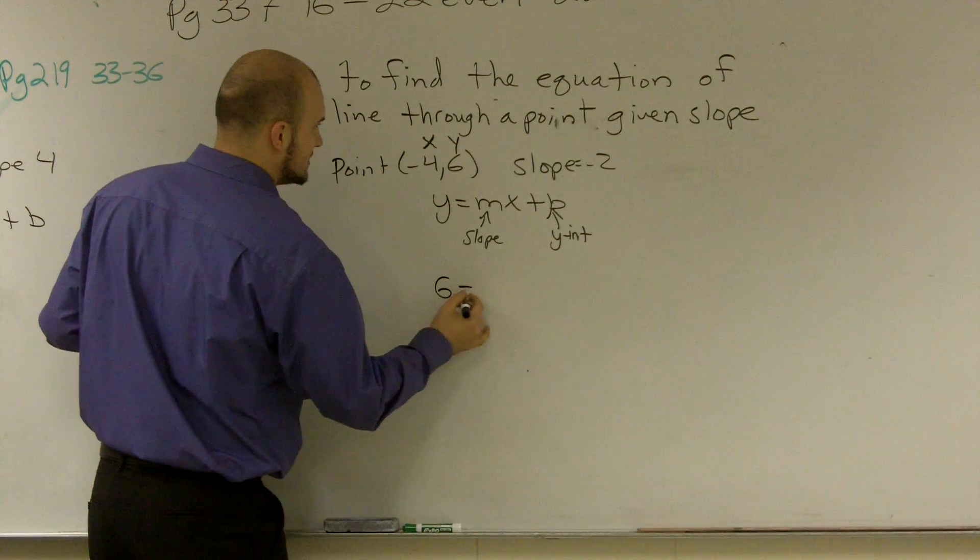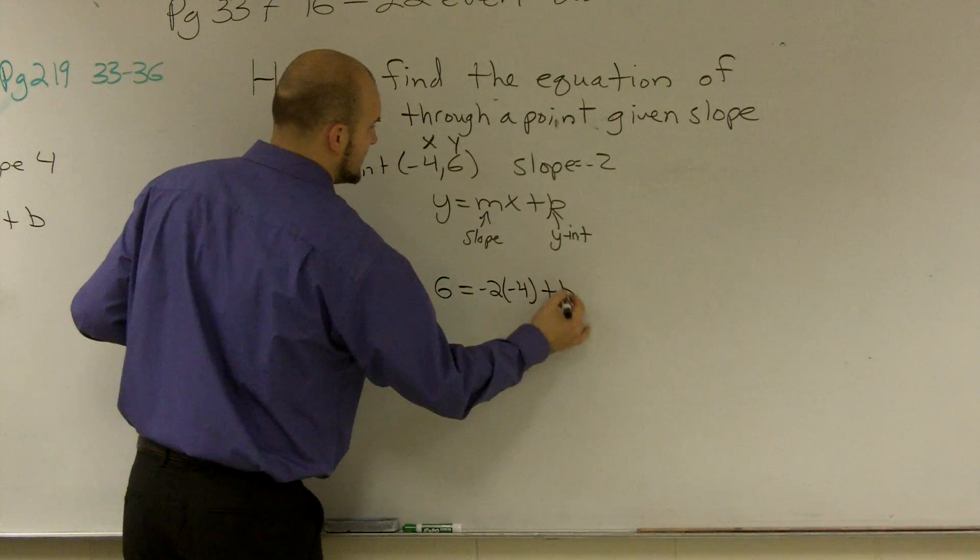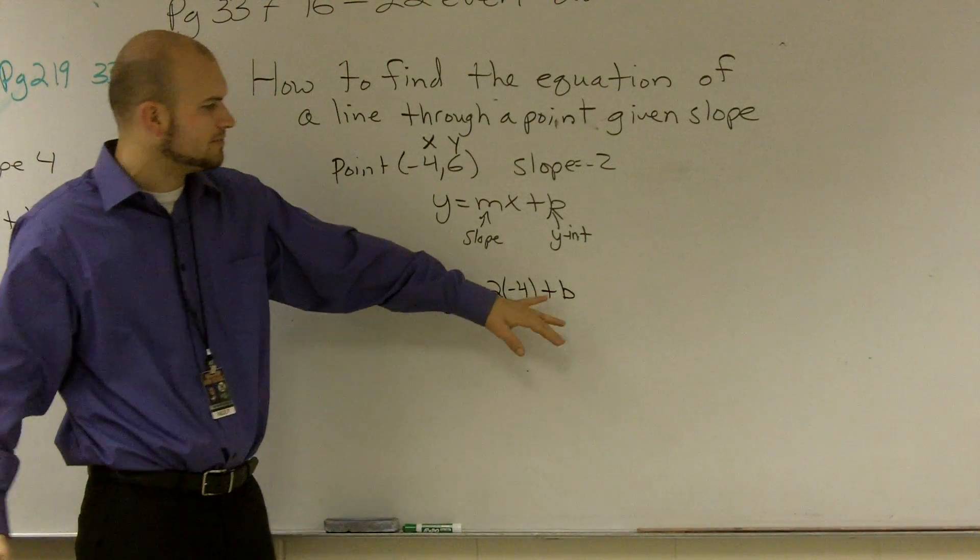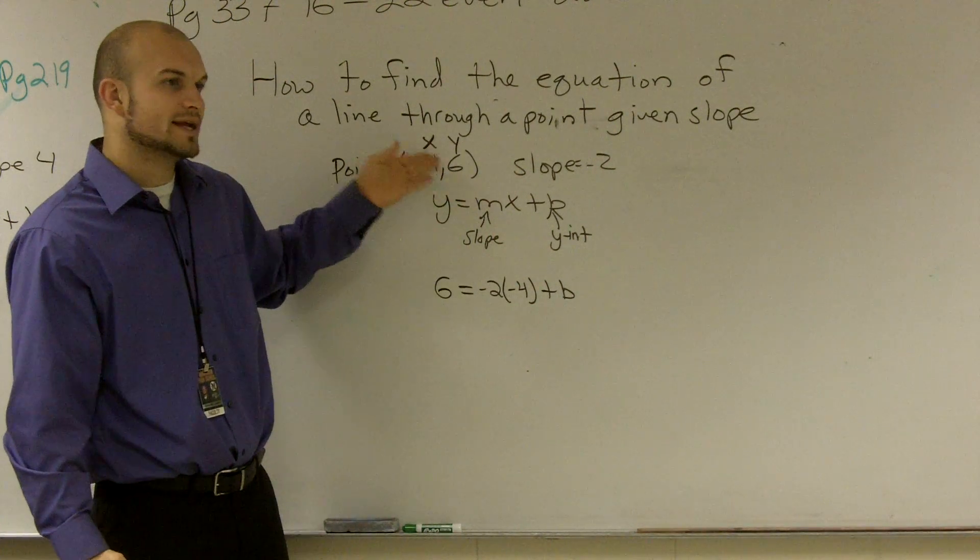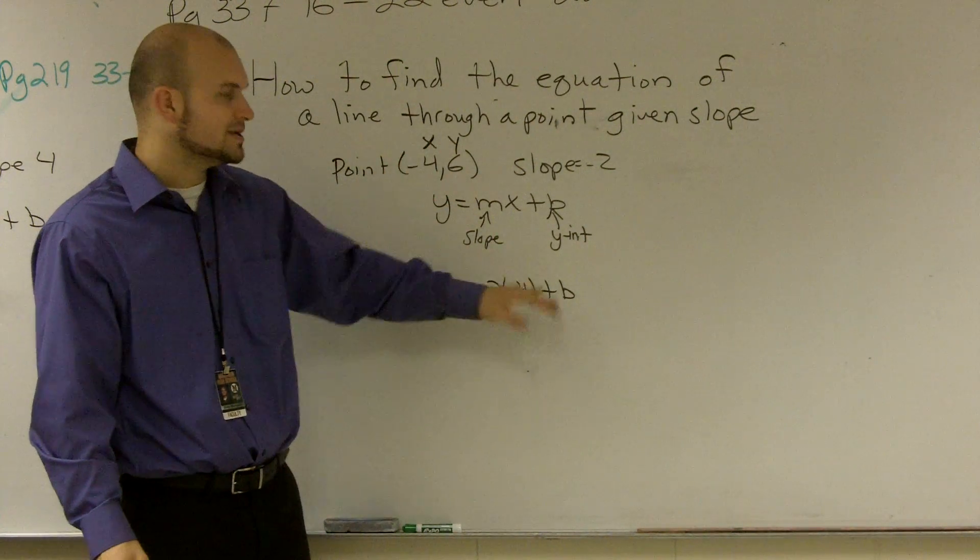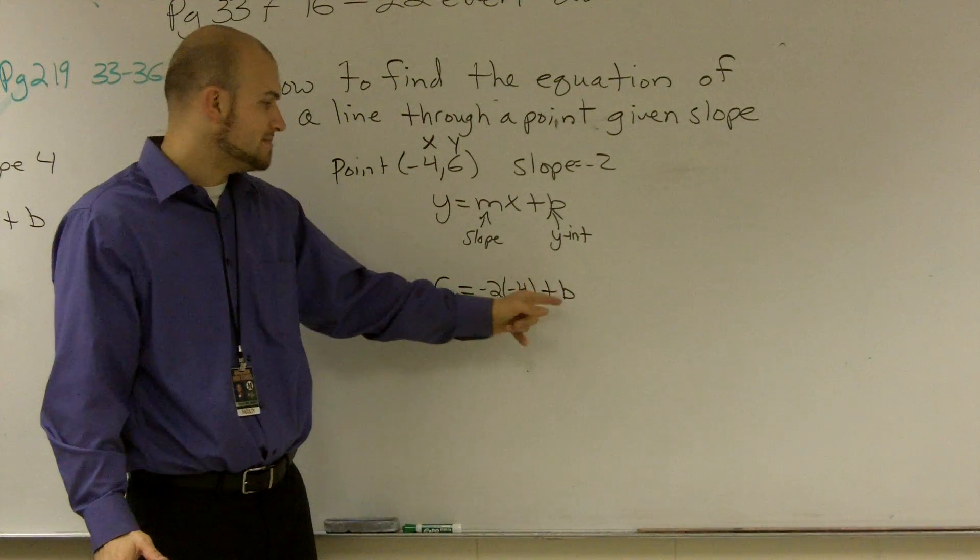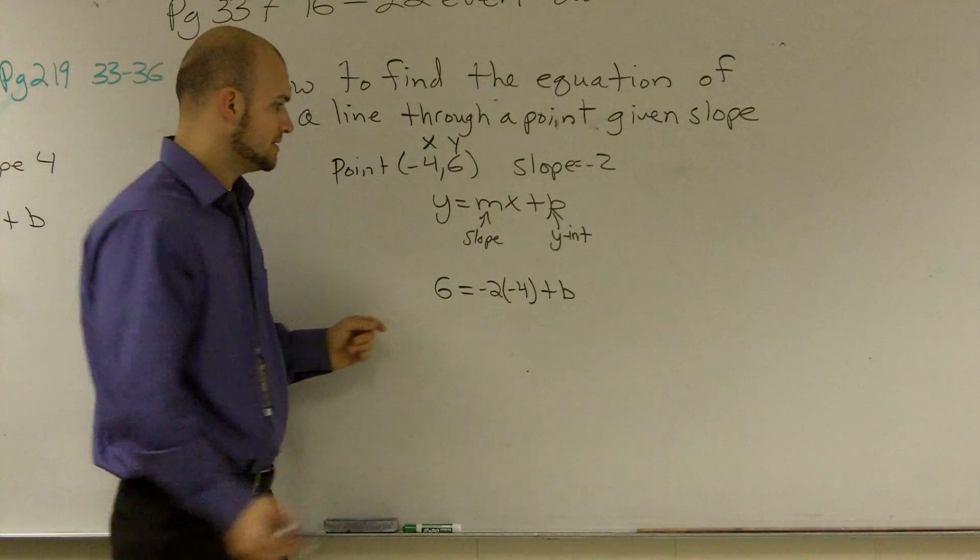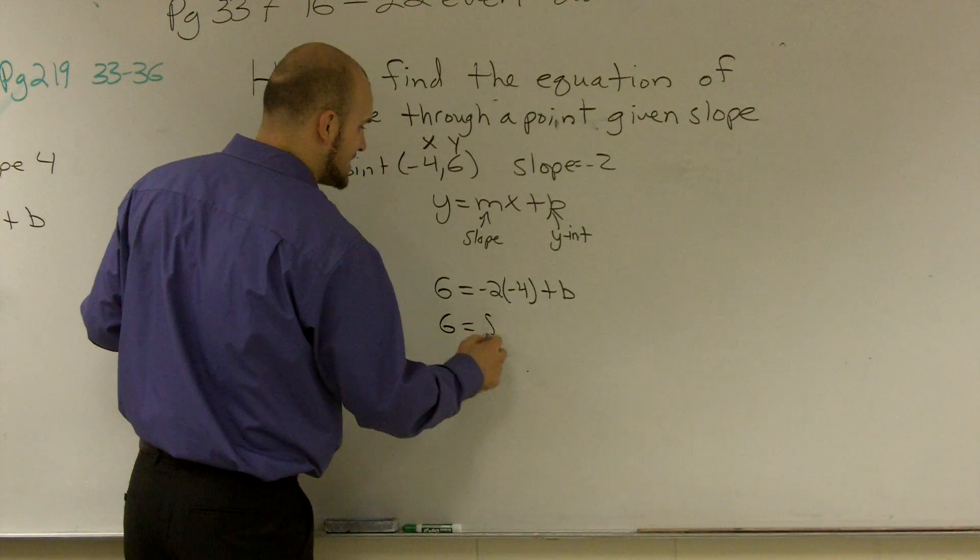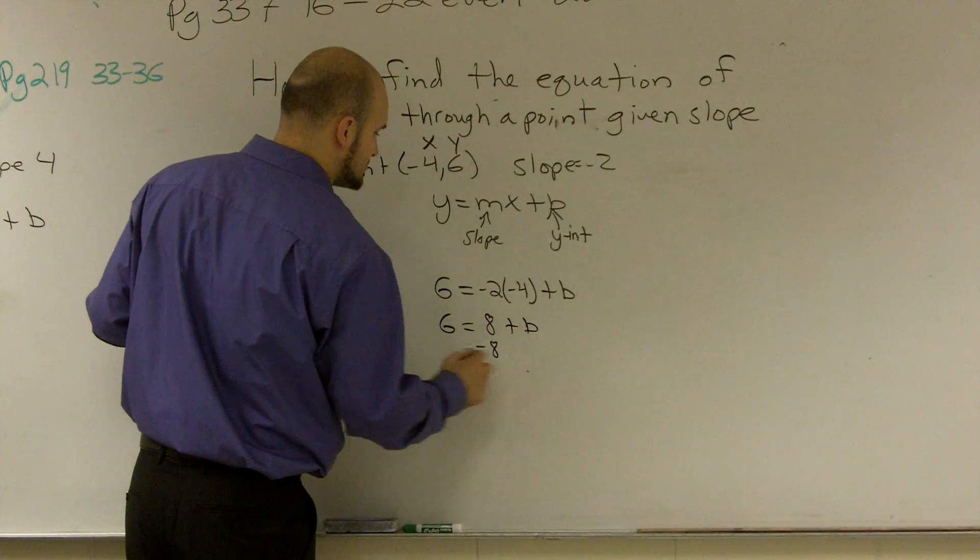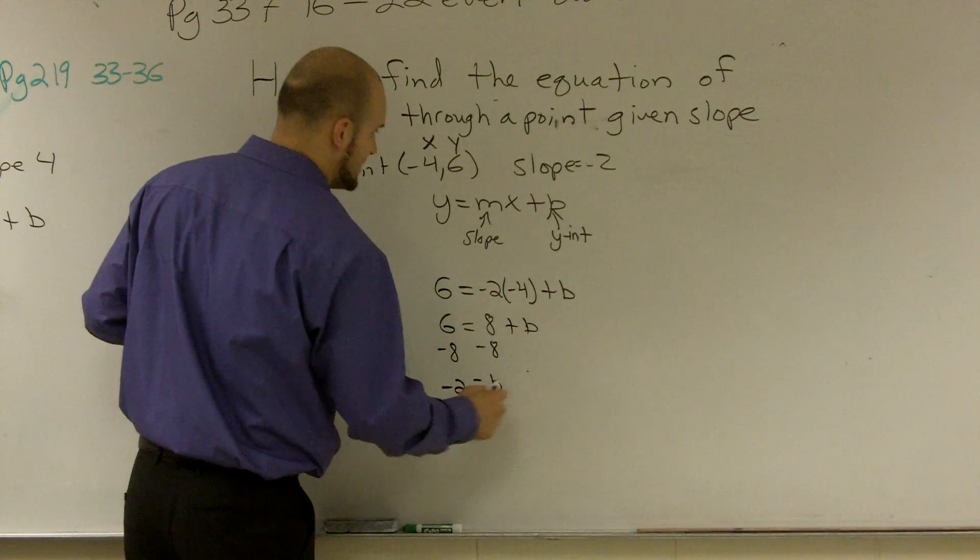So I have 6 equals negative 2 times negative 4 plus b. And again, why am I going to plug in b? Because I don't know what the y-intercept is. This is a random point that this line goes through. I do not know what the y-intercept is. I need to figure out what y-intercept would make this equation true. So I go 6 equals negative 2 times negative 4 is a positive 8 plus b. I subtract an 8 on both sides and I get a negative 2 equals b.